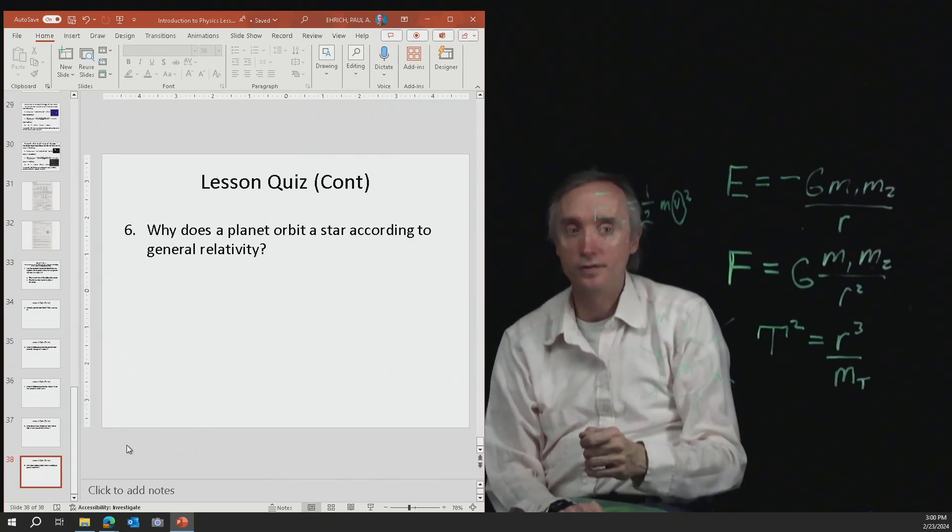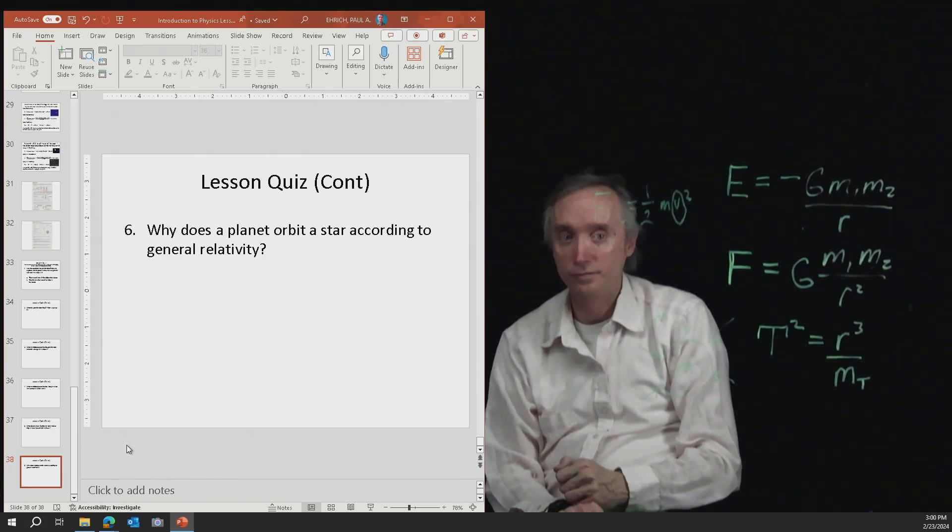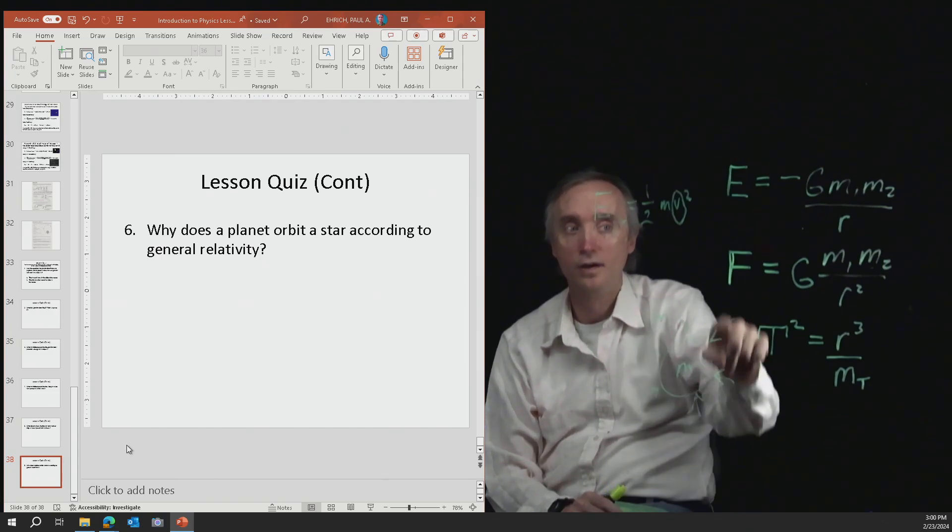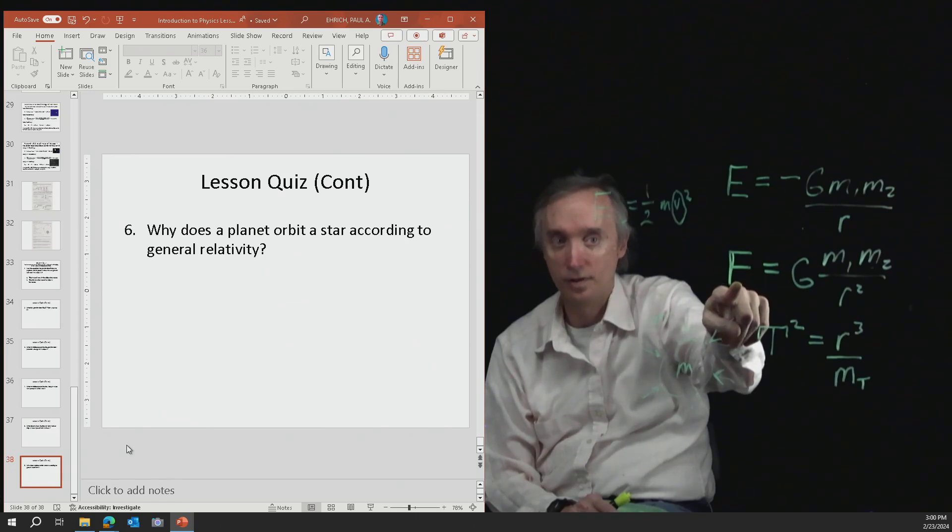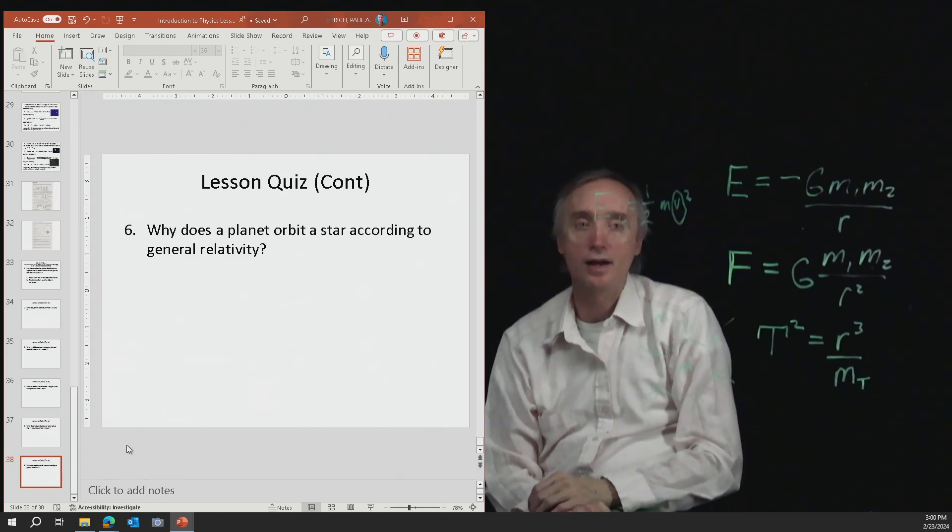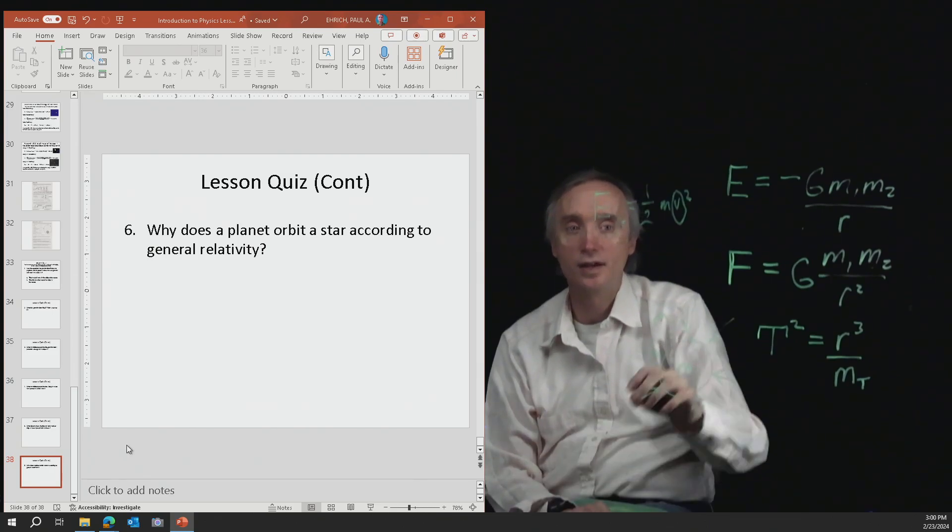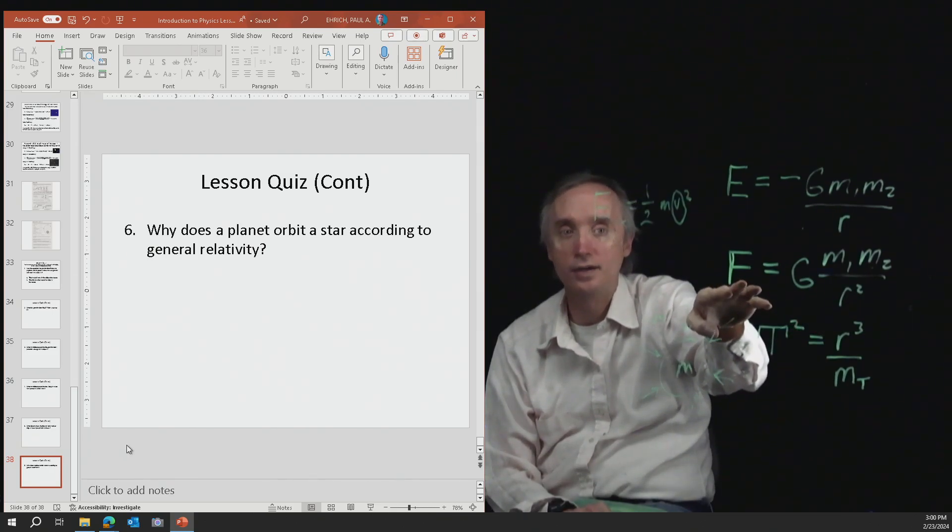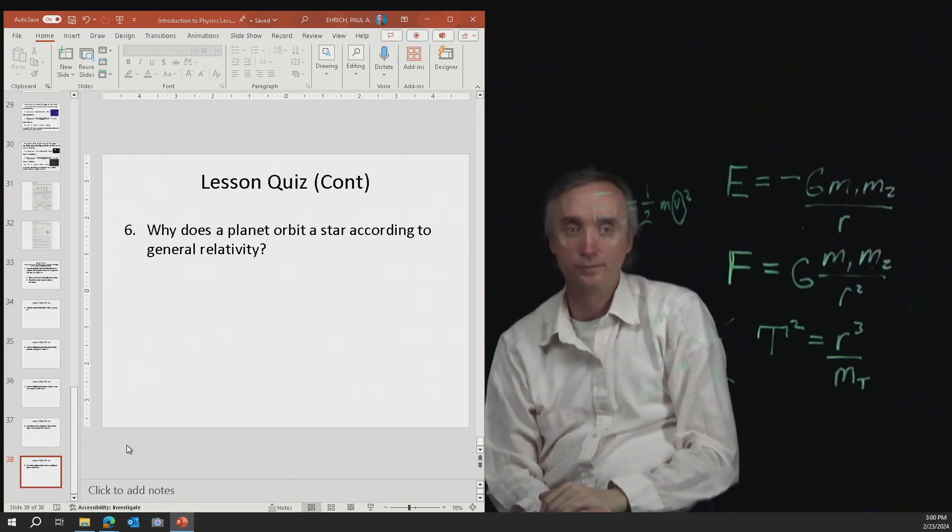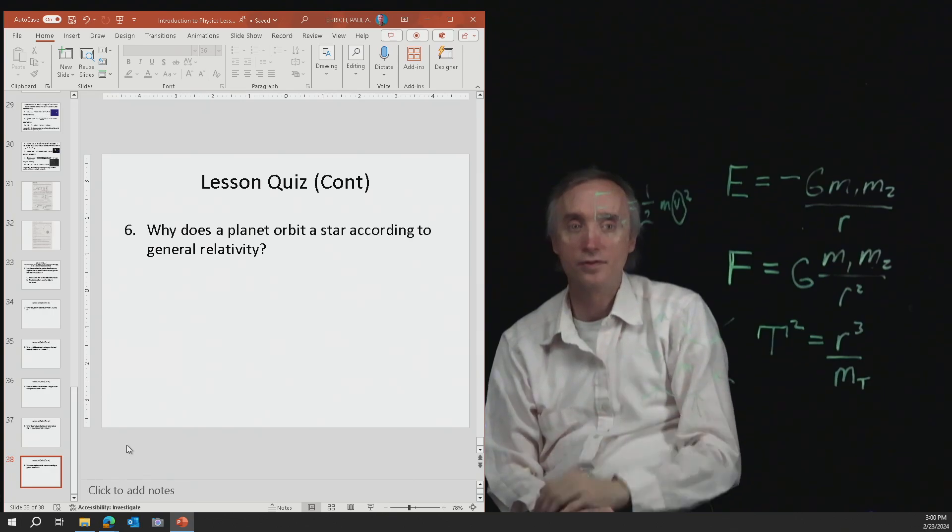That's completely different than Sir Isaac Newton. So Sir Isaac Newton would say, a planet orbits a star because it is experiencing a force. Einstein never used that concept. So instead of using the word force, Einstein just said the curvature of space and time caused by the mass of the star.